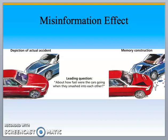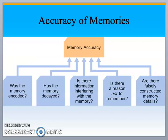How accurate are your memories? Was the memory encoded? Has the memory decayed? Is there interference with memory? Is there a reason not to remember? And are there faults in constructed memory details? All of this deals with forgetting and memory construction, and that concludes our lecture on Module 23, Forgetting and Memory Construction.